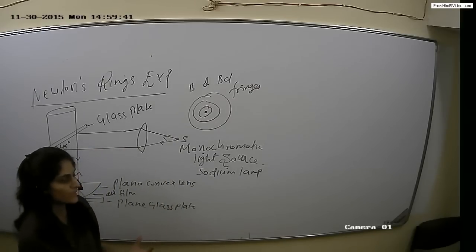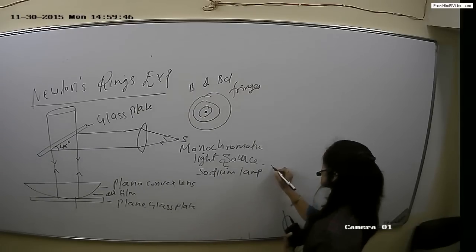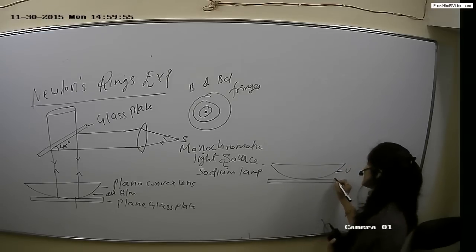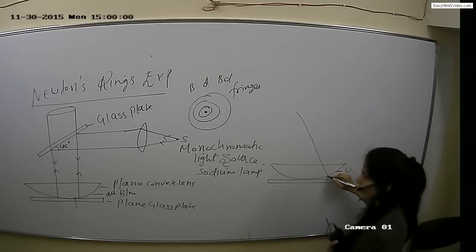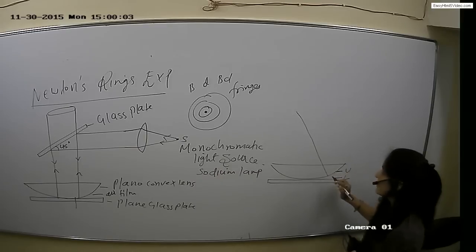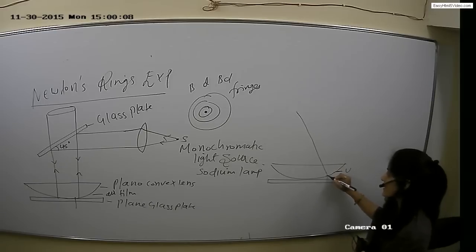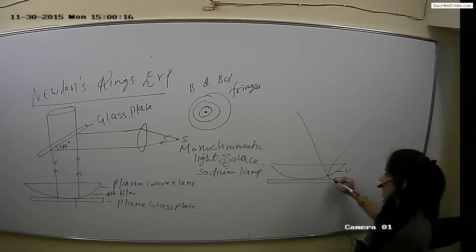Let me clarify how we get interference by division of amplitude. This is the plano-convex lens and this is the plain glass plate. This is the upper surface of the air film and this is the lower surface of the air film. When light is incident on the upper surface of the air film — which is the lower surface of the lens — light reflects and goes out. Half the light travels to the lower surface of the air film, where it again reflects and goes out.